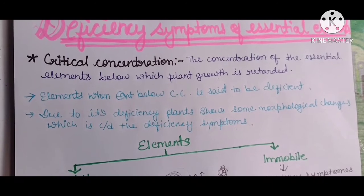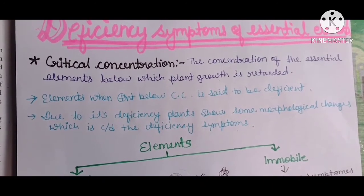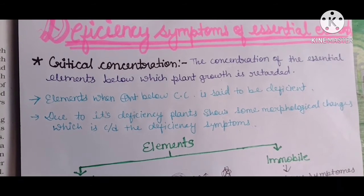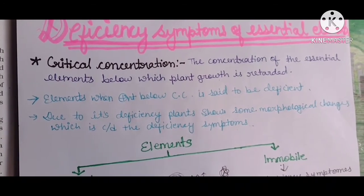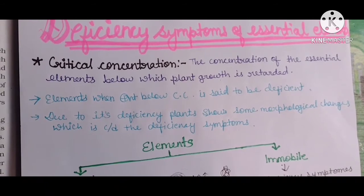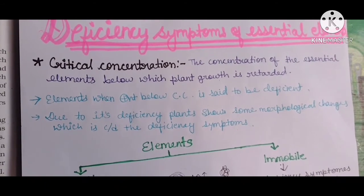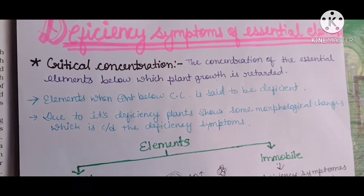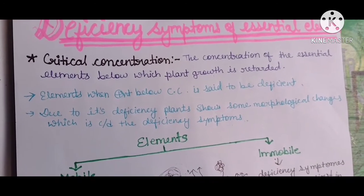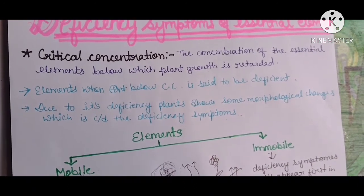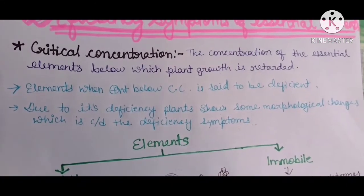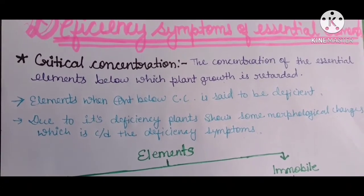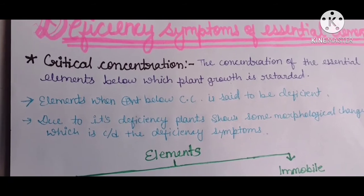If there is a small amount of concentration, there will be a retardation of plant growth — the plant growth will not be properly present. If the concentration falls below the critical level, there will be a deficiency, and due to that the plant will show some morphological changes, which are called deficiency symptoms.